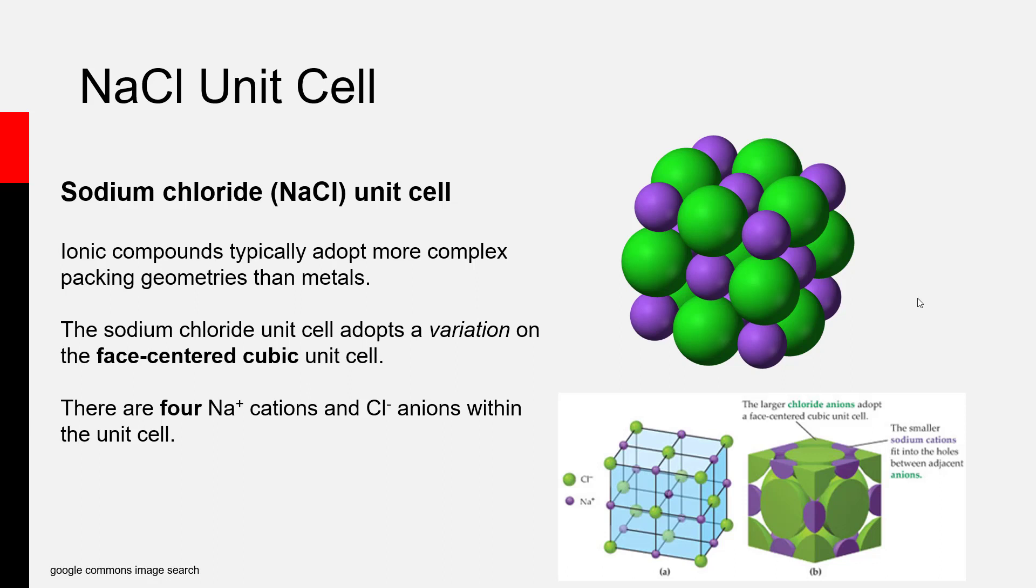Most solids, particularly ionic solids, have significantly more complex unit cells than elemental metals. Even a simple ionic compound like sodium chloride has a relatively complex unit cell compared to a metal.